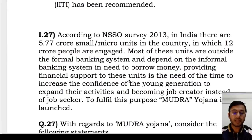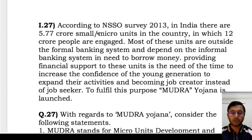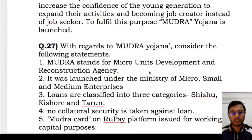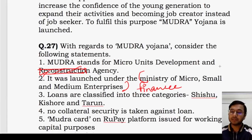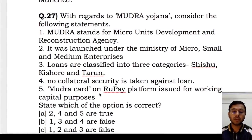Next question about an NSSO survey on micro units and enterprises. The question is about MUDRA: consider the following statements and find the incorrect ones. Statement 1 — MUDRA stands for Micro Units Development and Reconstruction Agency — incorrect, it is Refinancing, not Reconstruction. Statement 2 — launched under Ministry of Micro, Small and Medium Enterprises — also incorrect, it was launched under Ministry of Finance. Statements 3 (loans in three categories: Shishu, Kishore, Tarun), 4 (no collateral security), and 5 (MUDRA card on RuPay platform) are all correct. The answer is D — statements 3, 4 and 5 are correct.